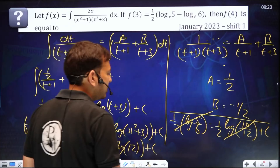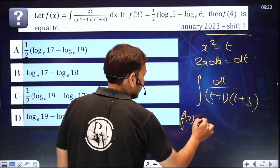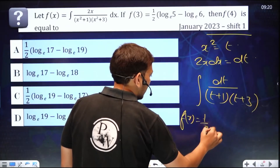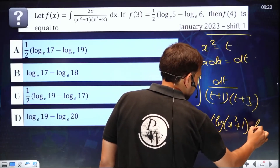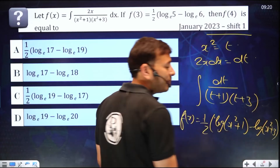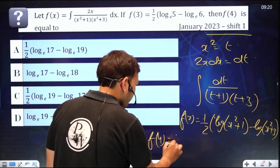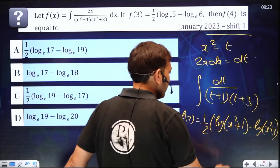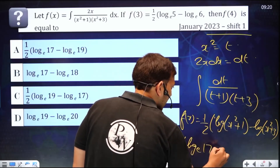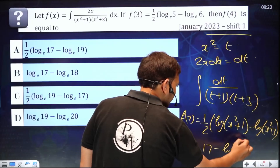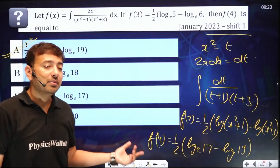So f(x) = (1/2)[log(x²+1) − log(x²+3)]. Now they ask for f(4): f(4) = (1/2)[log(16+1) − log(16+3)] = (1/2)[log 17 − log 19] = (1/2) log(17/19). The answer is log(17/19) — option A. As simple as that.